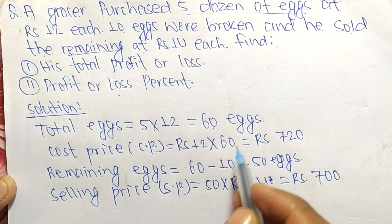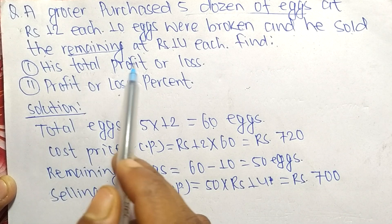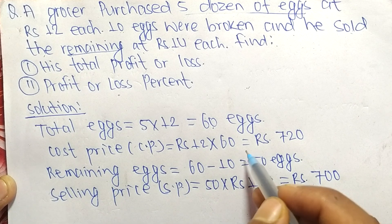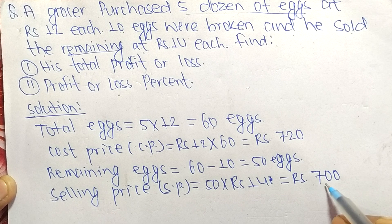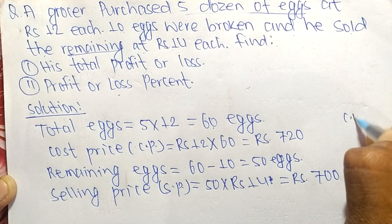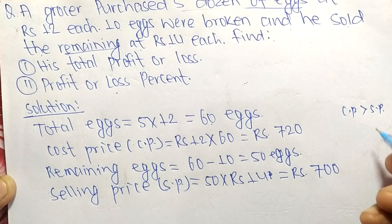These are the given data. Now we have to find total profit or loss. As you see, the CP is Rs 720 and SP is Rs 700, so CP is greater than SP. Therefore, we got a loss.